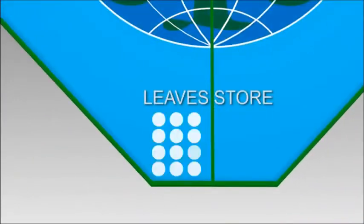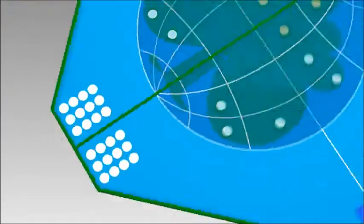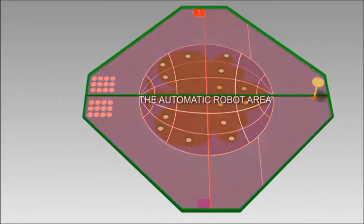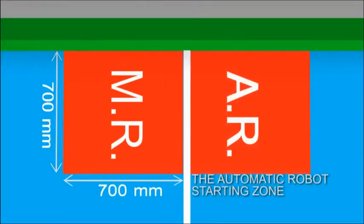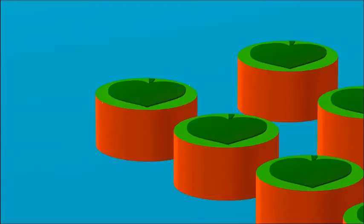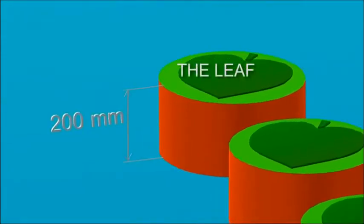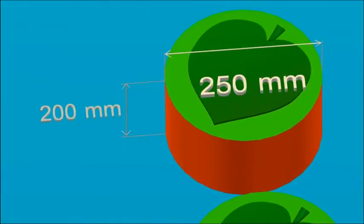Each team leaf store is located at the bottom of the game field. The automatic robot area is the Earth's zone and the surrounding area. There are two automatic robot starting zones next to manual robot starting zone. Leaves are in the shape of a cylinder, 200 millimeters in height, 250 millimeters in diameter.